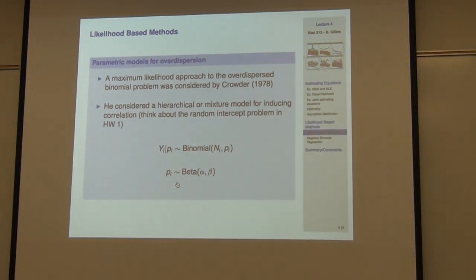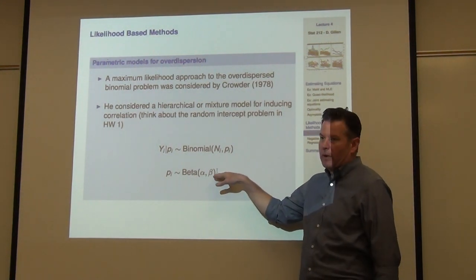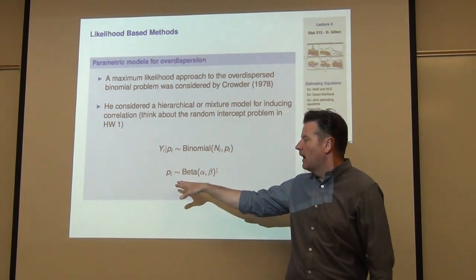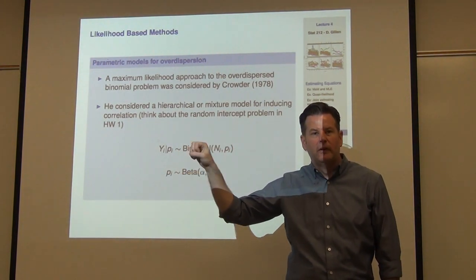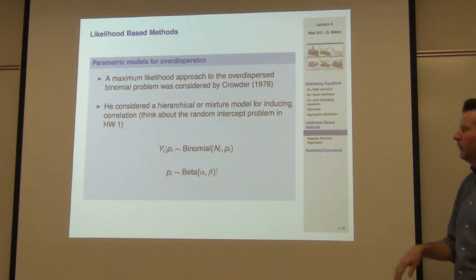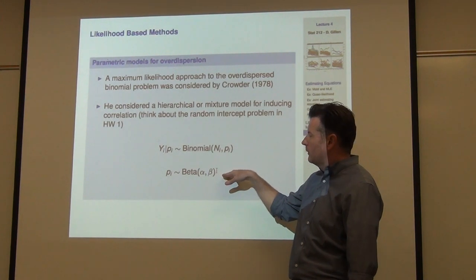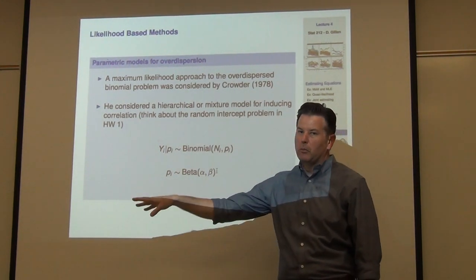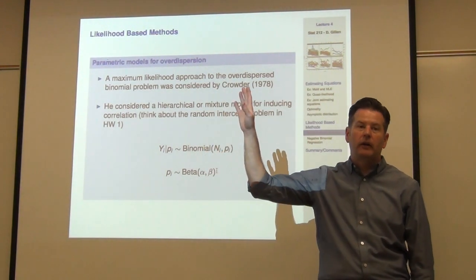This really boils down to: the way we're inducing correlation here is through a random effect. P_i is that random effect — it's an effect of the jar. Each jar has a latent random effect inducing a particular probability of death for the beetles. You've seen inducing correlation like this in another example — the negative binomial example for count data from homework number one, where you had a random effect Z_i.